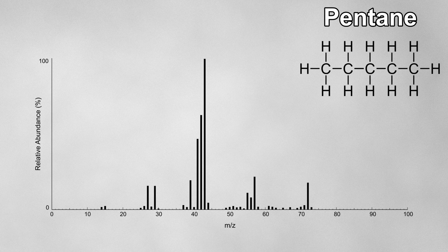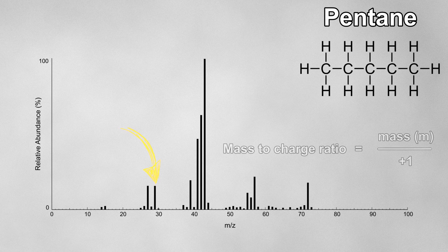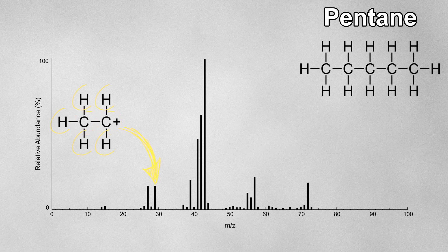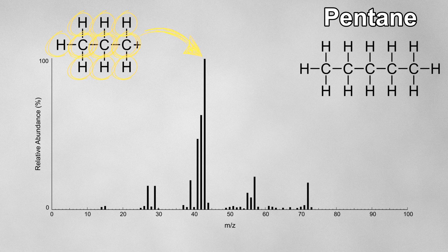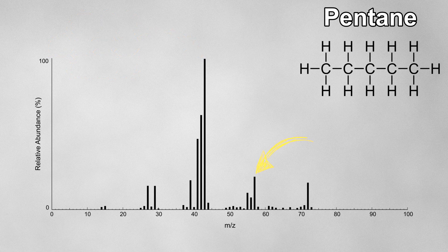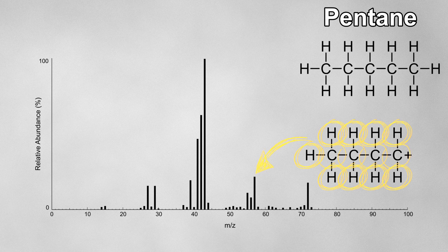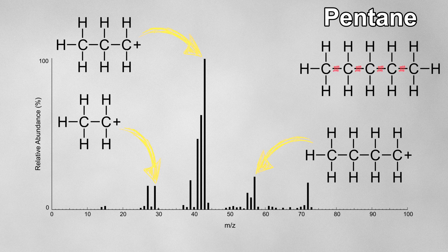Let's go back to the electron impact spectrum and look at some of the fragments. The first peak has a mass to charge ratio of 29 — this is most likely due to an ethyl cation, which contains 2 carbons each with mass 12 and 5 hydrogens each with mass 1, giving a total mass of 29. In an exam, always remember to include the positive charge or you won't get the mark. The next peak at 43 is due to a propyl cation with 3 carbons and 7 hydrogens. The peak at 57 is due to a butyl cation with 4 carbons and 9 hydrogens. It's easy to see how all these fragments formed by breaking different carbon-carbon bonds along the pentane molecule.